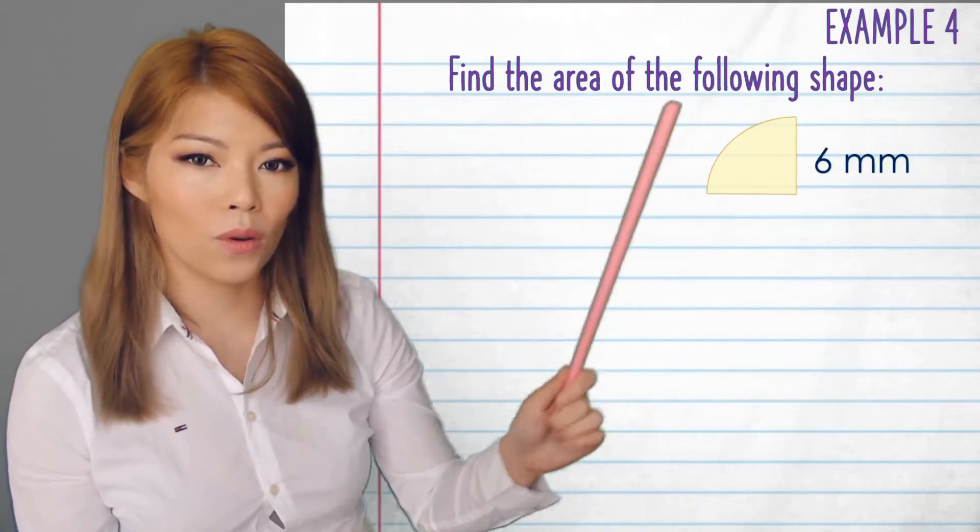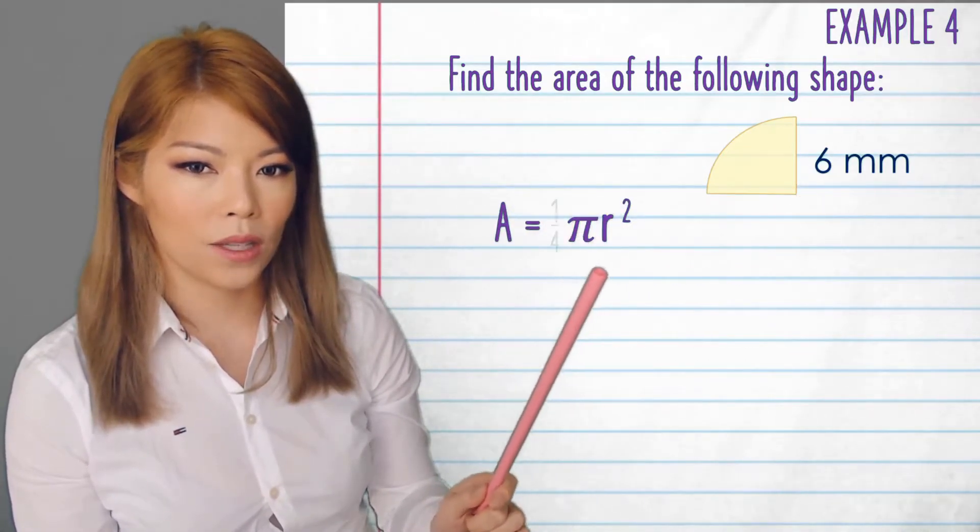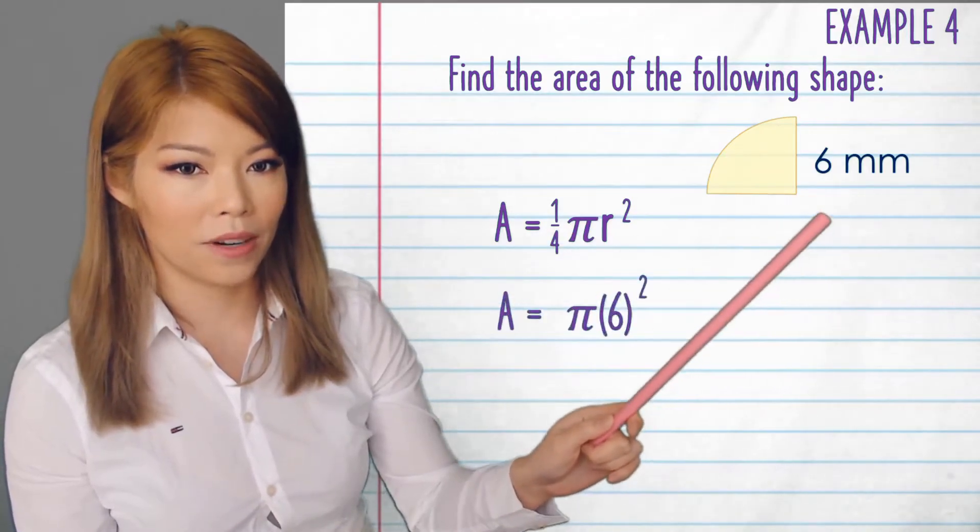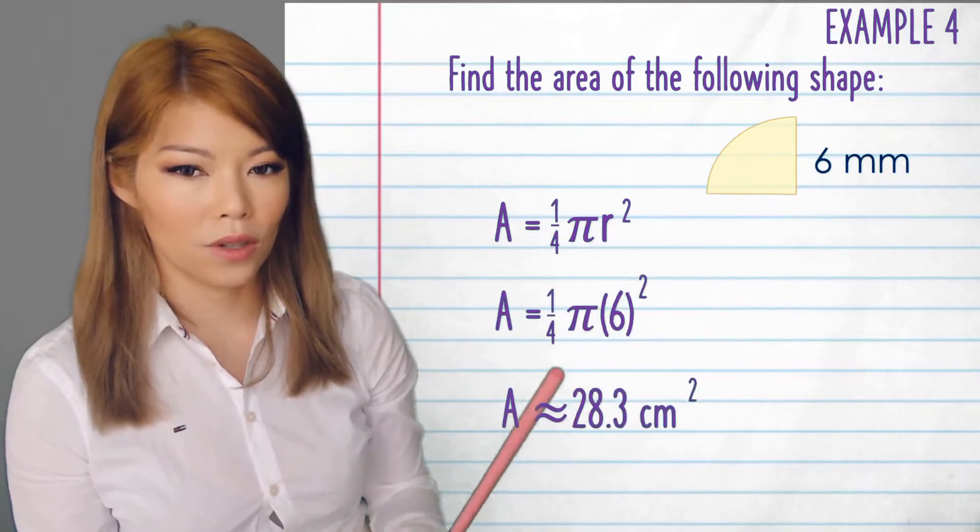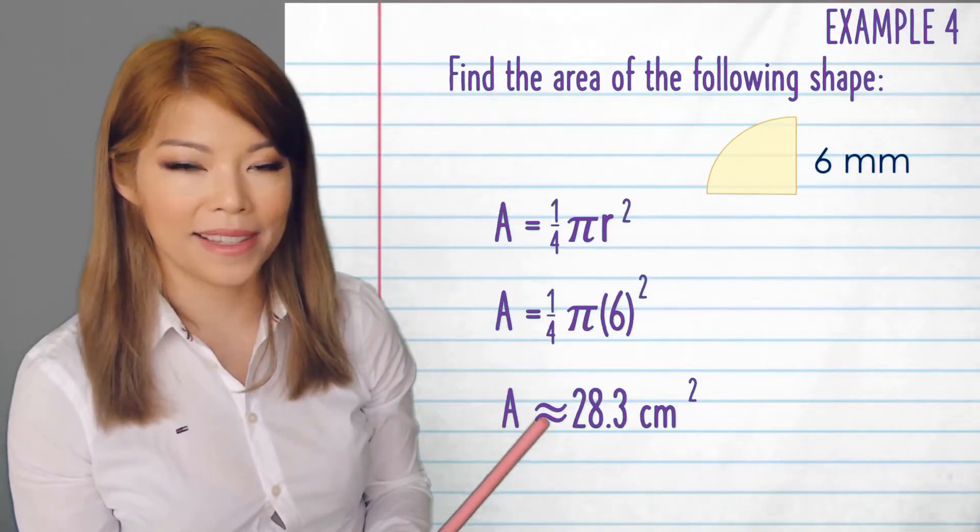Example 4. Here we have a quarter of a circle and the radius. So the area is pi r squared divided by 4, or pi r squared times a quarter. And the radius is already given, so it's 6 over there. Don't forget that quarter. Plug it into the calculator and you get 28.3 centimeters squared.